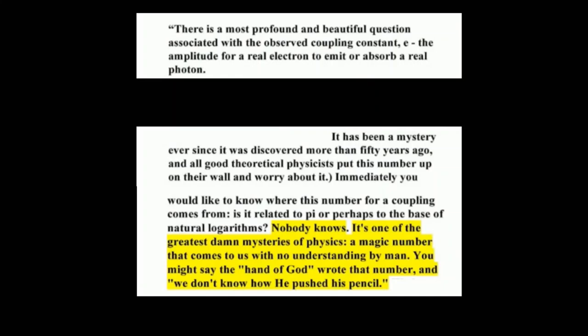I can quote him directly, actually. There is a most profound and beautiful question associated with the observed coupling constant, E, the amplitude for a real electron to emit or absorb a real photon. This is Feynman speaking. It has been a mystery ever since it was discovered more than 50 years ago, and all good theoretical physicists put this number up on their wall and worry about it. Immediately you would like to know where this number for a coupling comes from. Is it related to pi or perhaps to the base of natural logarithms? Nobody knows. It's one of the great damn mysteries of physics, a magic number that comes to us with no understanding by man. You might say the hand of God wrote that number, and we don't know how he put it.